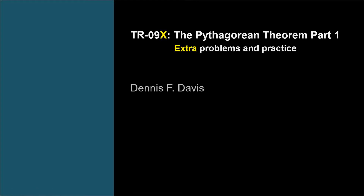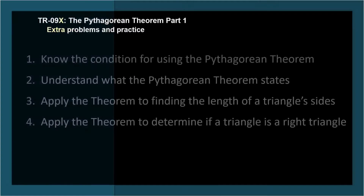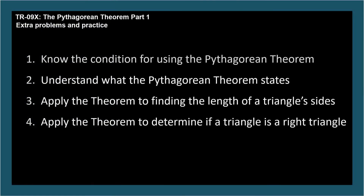The learning objectives for TR-09 are: know the conditions for using the Pythagorean theorem, understand what the Pythagorean theorem states, apply the theorem to finding the length of a triangle's sides, and apply the theorem to determine if a triangle is a right triangle.